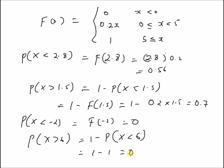This result is clearly justified: when you differentiate the CDF you get the PDF, and the value of the PDF for x greater than 5 is 0. So the probability that x is greater than 6 is 0, since the PDF is 0 for all values of x greater than 5.